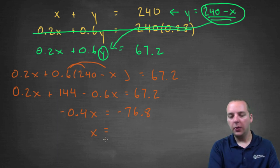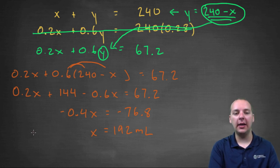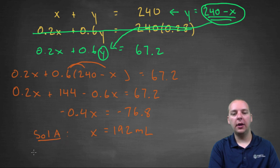Divide both sides by negative 0.4, we'll get 192, and remember the units were in milliliters. So 192 milliliters, and that was the amount in solution A.